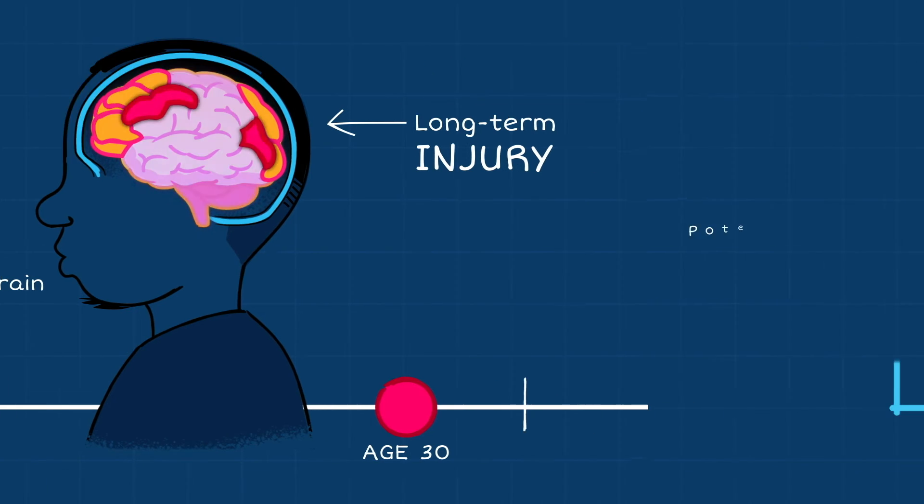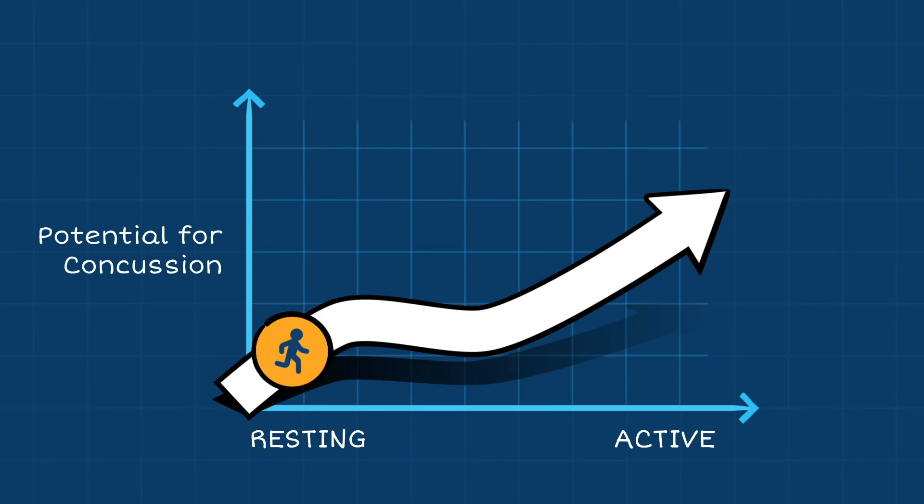The potential for a concussion is increased when children are active. A graph appears on screen. The x-axis reads, Resting and Active. The y-axis reads, Potential for Concussion. A white arrow curves upward to the right along the graph. An icon of a running child glides along this arrow.